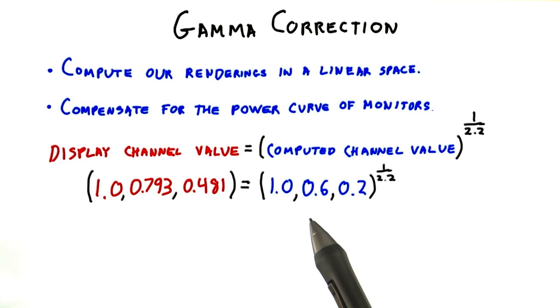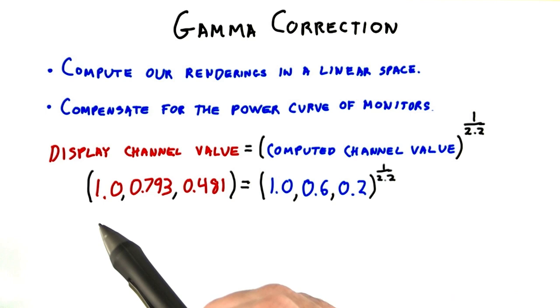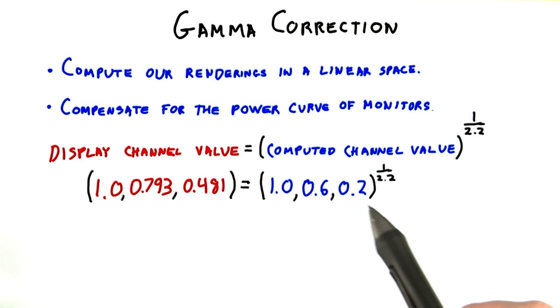We raise 1 to this power and we get 1 back. 0.6 raised to the power gets 0.793. Finally, 0.2 gives us 0.481. Notice how each channel changes by a different factor. One didn't change at all. 0.2 more than doubles. This is why color shifting can occur if you don't gamma correct.